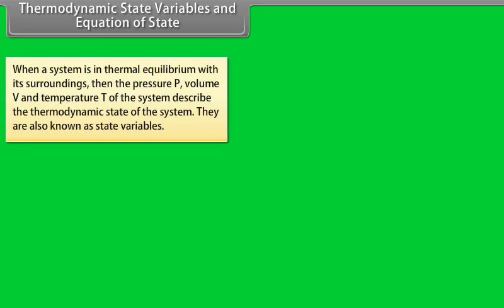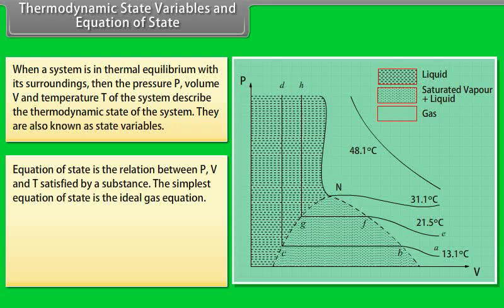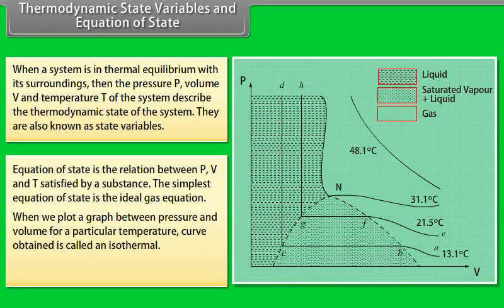Thermodynamic state variables and equation of state: when a system is in thermal equilibrium, the pressure P, volume V, and temperature T describe the thermodynamic state of the system and are also known as state variables. The equation of state is the relation between P, V, and T satisfied by a substance. The simplest equation of state is the ideal gas equation. When a graph is plotted between pressure and volume for a particular temperature, the curve obtained is called an isothermal. A plot of different isothermals for CO₂ is shown in the graph.